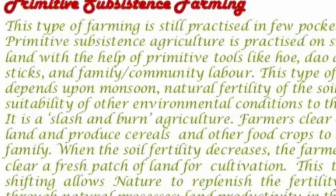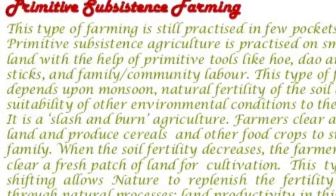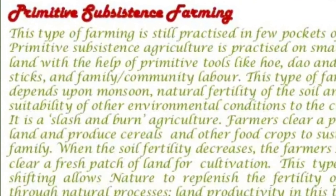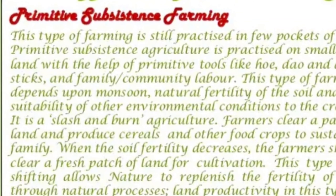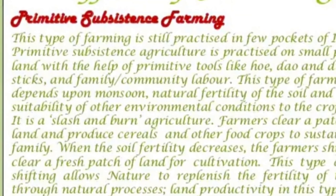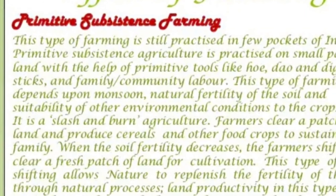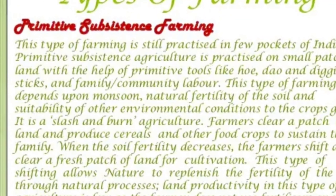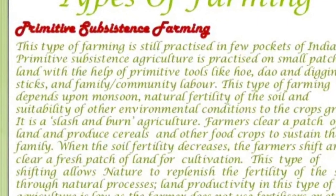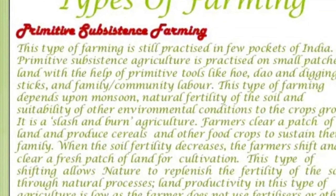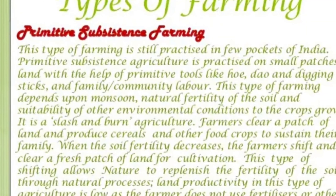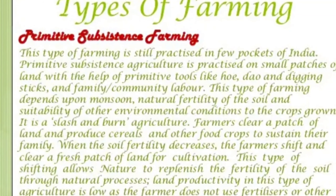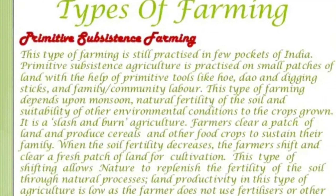What is primitive subsistence farming? Simple subsistence farming is also called the old primitive method. Here, agriculture is practiced on small patches of land with the help of primitive tools like hoe and digging sticks, with the help of family members or community labor. They depend upon the monsoon and environmental conditions. This is also called shifting type of cultivation, where they work on one area, clear it, and then move on to cultivate another area.